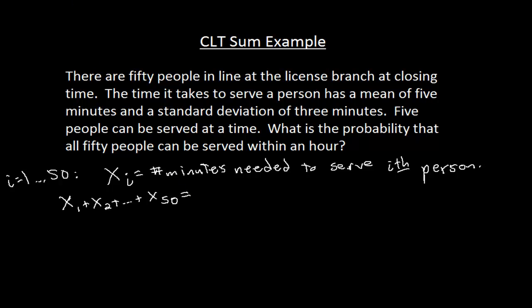That distribution is going to be approximately normal because it makes sense to assume that these random variables are first of all identical. There's no reason to think that the fifth person is going to be more or less likely to take six minutes than the first person. They're going to be identically distributed and independent. This is going to be normally distributed with a mean equal to 50 times 5, that's 250, and a standard deviation of the square root of 50 times 3.